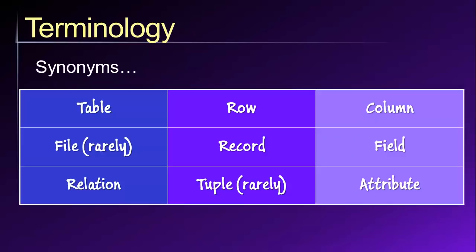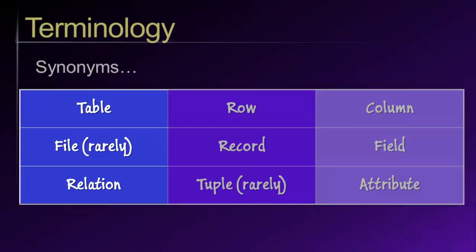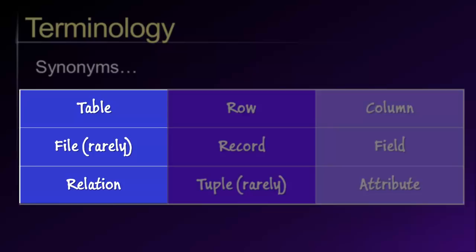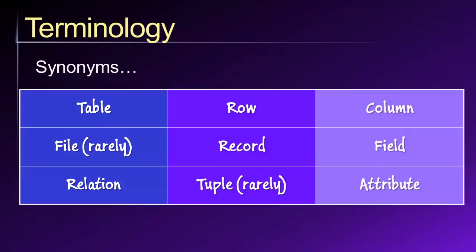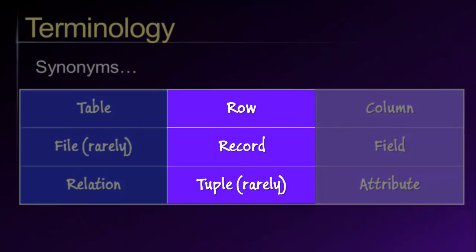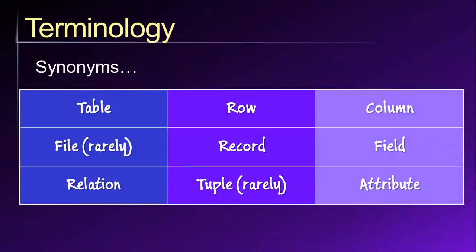Let's further expand our database vocabulary by looking at some synonyms. Depending upon which textbook you read or which database manager you are speaking with, different people use different words for the same concept. The terms table, relation, and file all generally refer to the same concept, though in the modern era people will rarely refer to a database table as a file. Other synonyms include row, record, and tuple — all referring to the horizontal data structure within a table. Finally, the vertical data structure within a table might alternately be referred to as a column, a field, or an attribute.